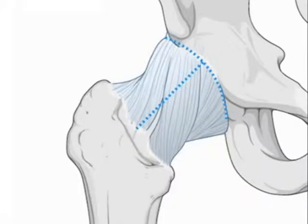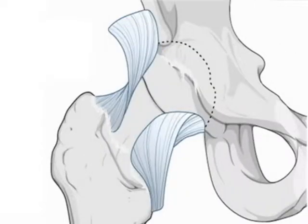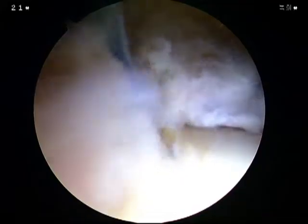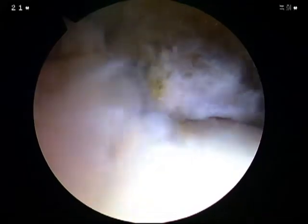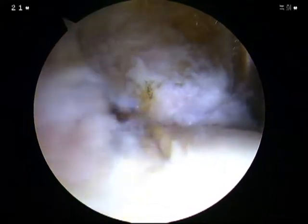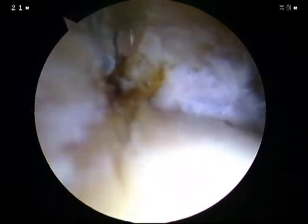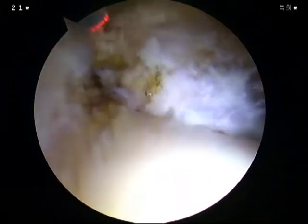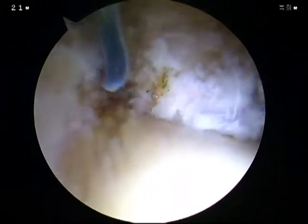T-shaped capsulotomy is performed to expose the anterosuperior CAM lesion of the patient. Capsulotomy using a hook-type arthrocare is being performed.